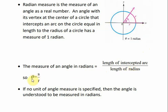So theta, the angle in radians, is equal to S, which represents the length of the intercepted arc, divided by R, which is the radius. If no angle measure is specified, then the angle is understood to be measured in radians.